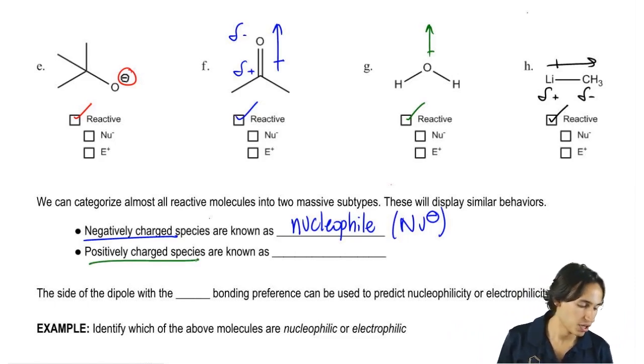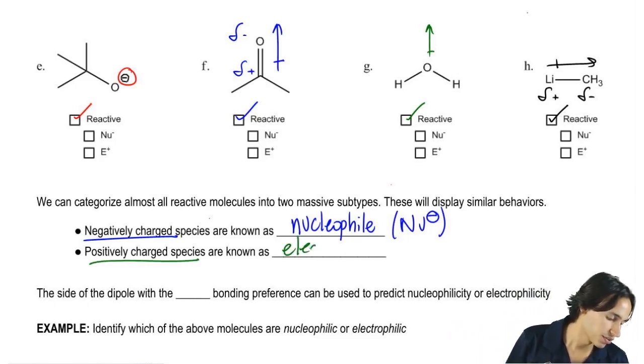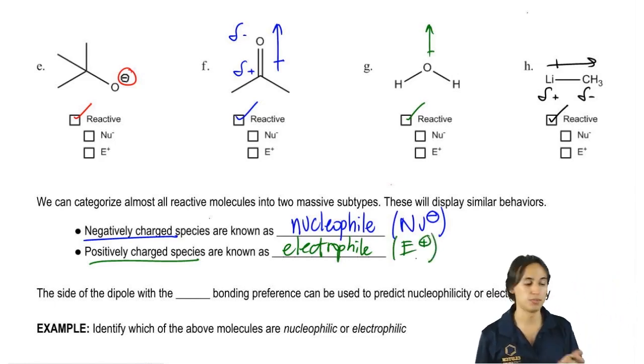Then the positively charged ones are going to be known as electrophiles. Electrophiles, I'm going to abbreviate using E+, meaning that it's a positively charged substance.